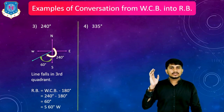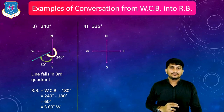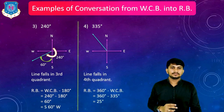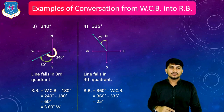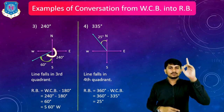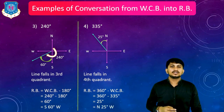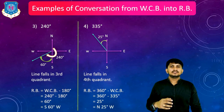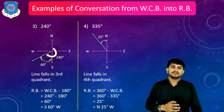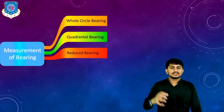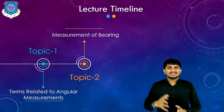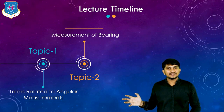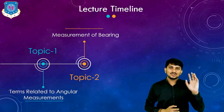Last example: suppose WCB equals 335 degree. 335 lies in the fourth quadrant. RB equals 360 degree minus WCB, which gives 25 degree. Since the angle starts from north direction towards the west side, it is written as North 25 degree West. This is how we can convert WCB into RB. This is all about measurement of bearings. I hope you understand these two topics — terms related to angular measurement and measurement of bearings. See you soon in the next lecture.